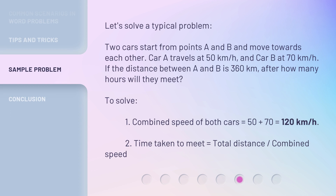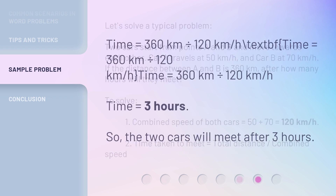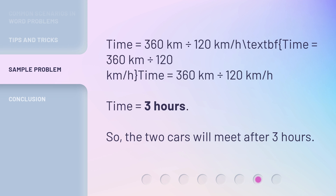Let's solve a typical problem. Two cars start from points A and B and move towards each other. Car A travels at 50 kilometers per hour, and car B at 70 kilometers per hour. If the distance between A and B is 360 kilometers, after how many hours will they meet? To solve: the combined speed of both cars equals 50 plus 70, which equals 120 kilometers per hour. The time taken to meet equals total distance divided by combined speed: 360 kilometers divided by 120 kilometers per hour equals 3 hours. So, the two cars will meet after 3 hours.